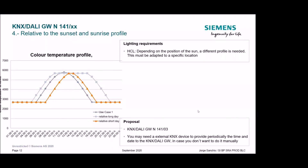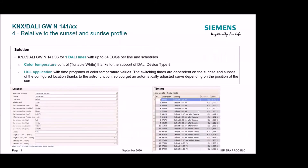The fourth use case: we want time programs depending on the position of the sun — relative to sunset and sunrise. Because in summer and winter we have different times for the sun, you can see relative long-day and relative short-day curves. You can do all of this only with the KNX-DALI gateway — you don't need external logic or external visualization, because our KNX-DALI gateway time programs have astro functions.